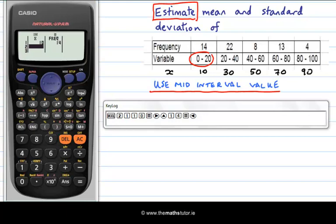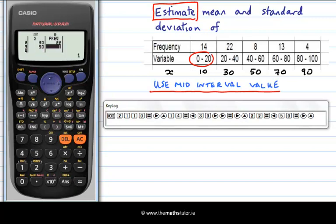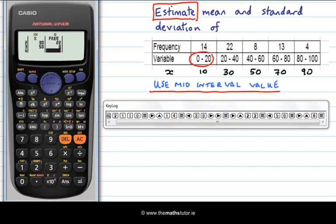Next we enter 30 and equals and its frequency is 22. The next variable is 50 and equals and its frequency is 8. And 70 equals and its frequency is 13. And we can edit that final value which is 90.